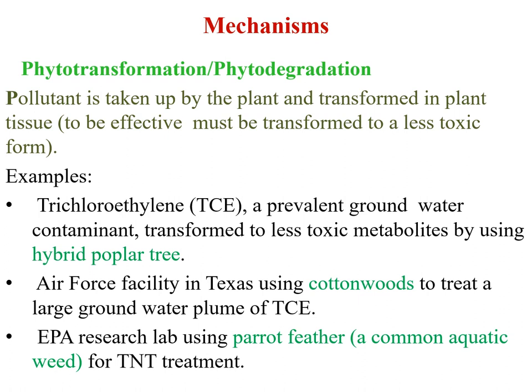The mechanism of phytotransformation or phytodegradation involves pollutants being taken up by plants and transformed in plant tissue. A very good example is TCE (trichloroethylene), a prevalent groundwater contaminant, which is transformed to less toxic metabolites using hybrid poplar trees. With the help of poplar trees, we can remediate TCE contamination in groundwater — this is a very important application.